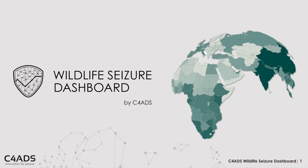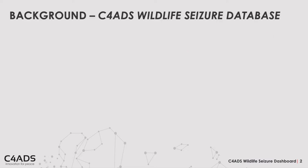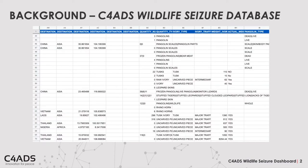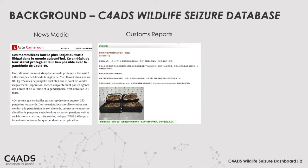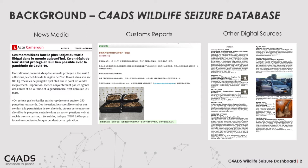Before we explore the dashboard, we must first examine its underlying data, which is located in the C4ADS Wildlife Seizure Database. In 2016, the C4ADS Wildlife Seizure Database was created in order to record information on wildlife seizures from a variety of publicly available resources, including news media, customs reports, and other digital sources in 15 languages from all around the world. The purpose of this database was to gain better insight into illicit wildlife trafficking.